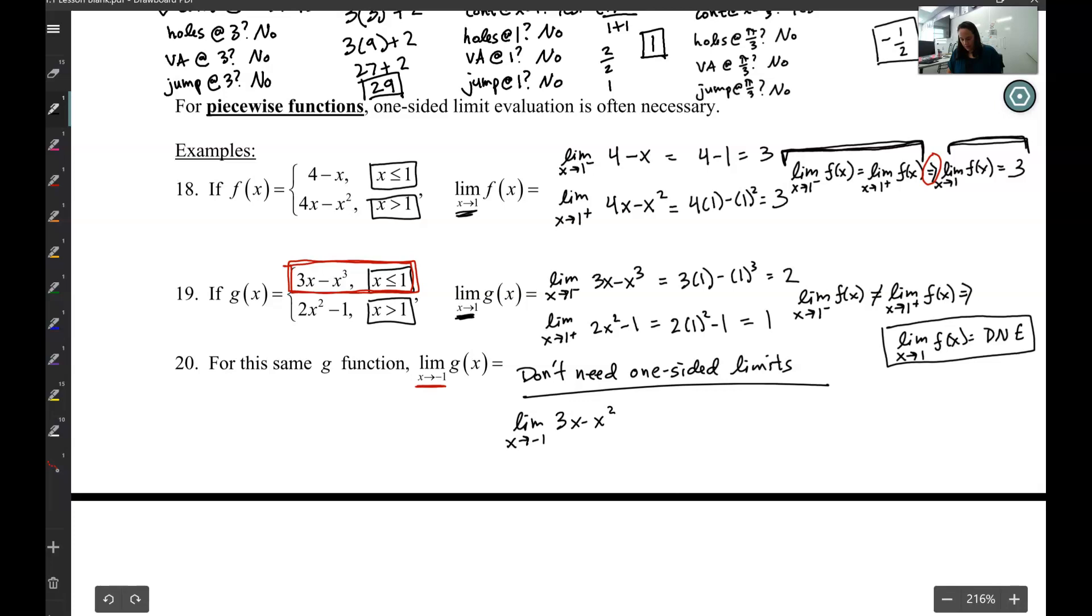That would be my 3x minus x cubed. I can do some direct substitution because this is going to be continuous. So 3 times negative 1 is negative 3. Negative 1 cubed is negative 1, but I have two negatives. Equals negative 2.